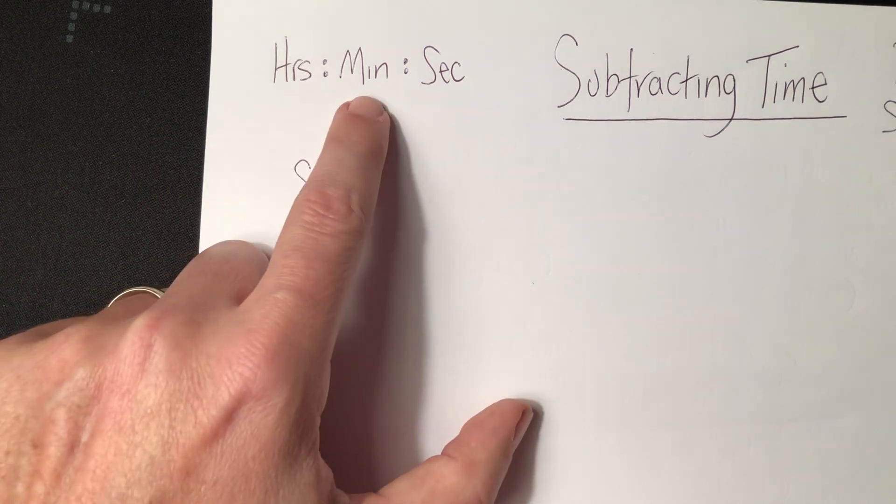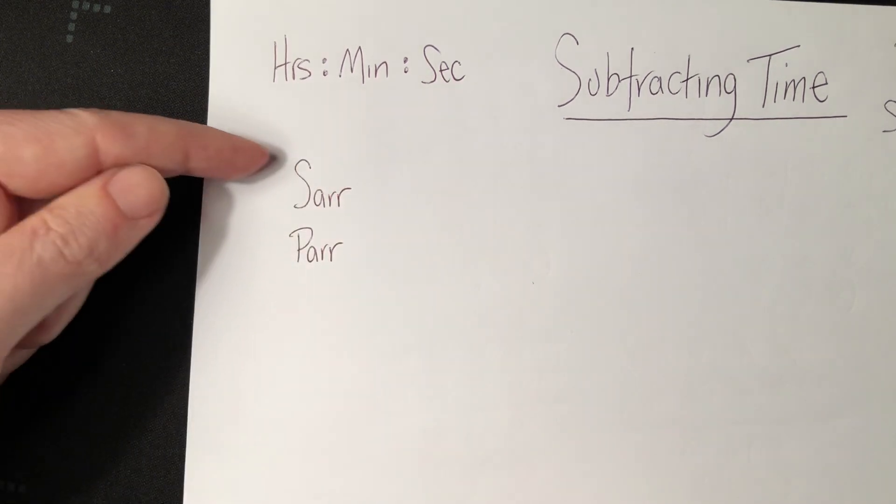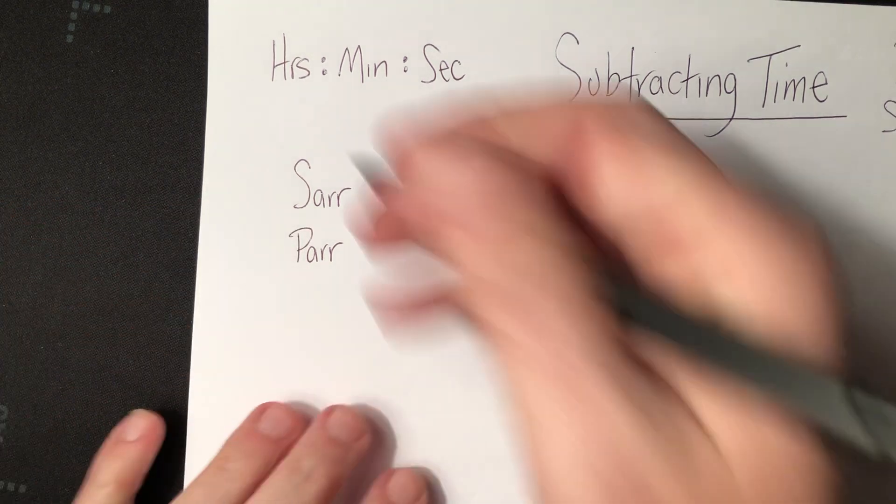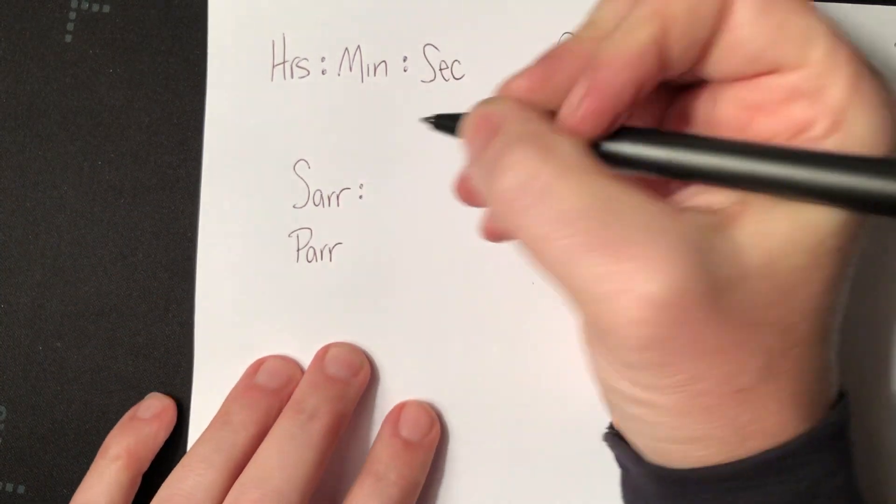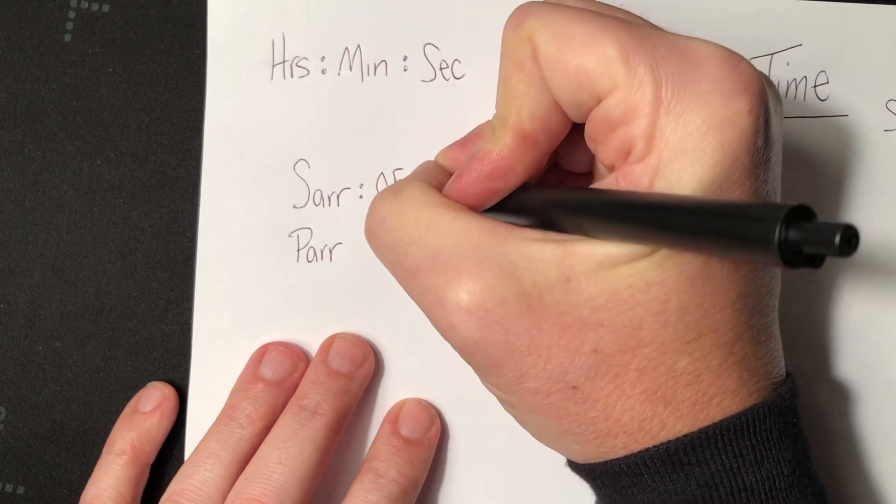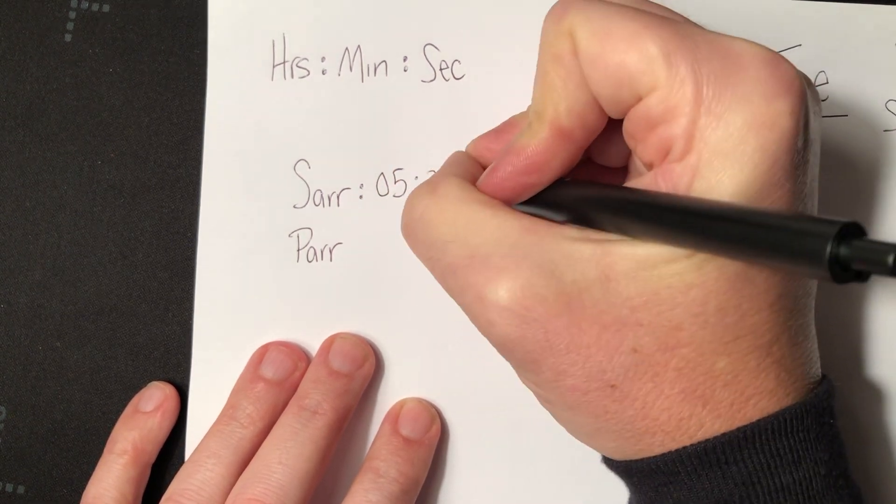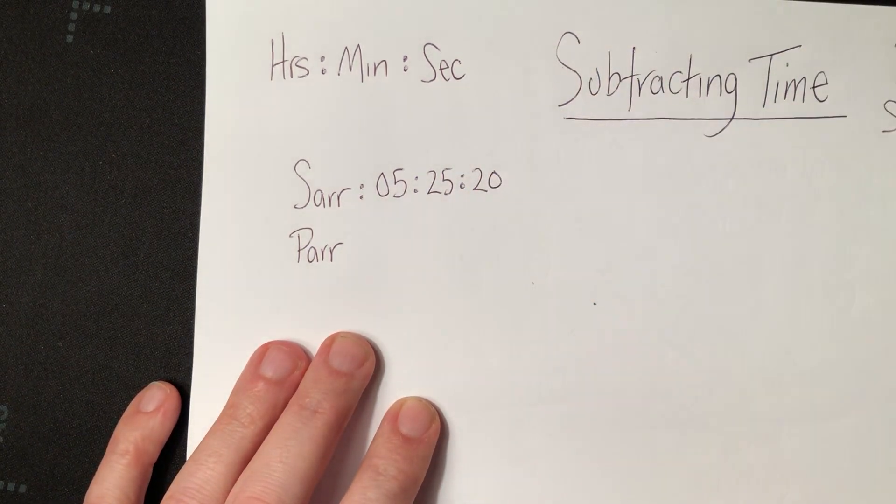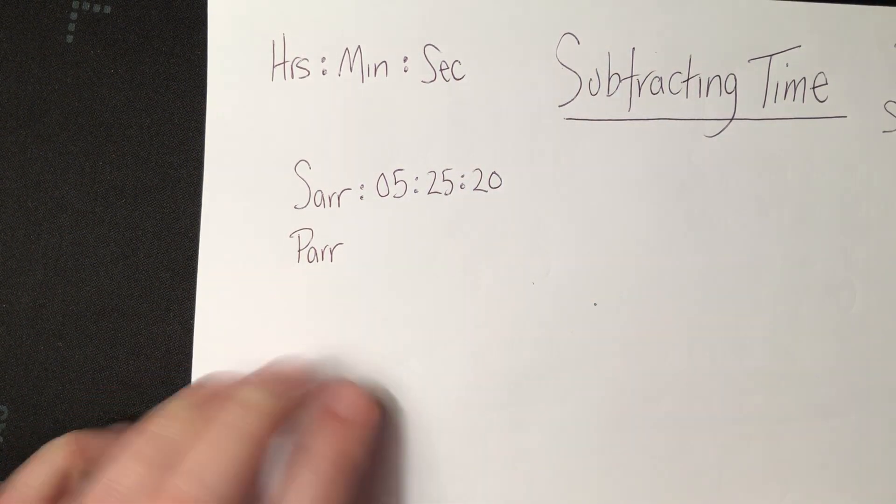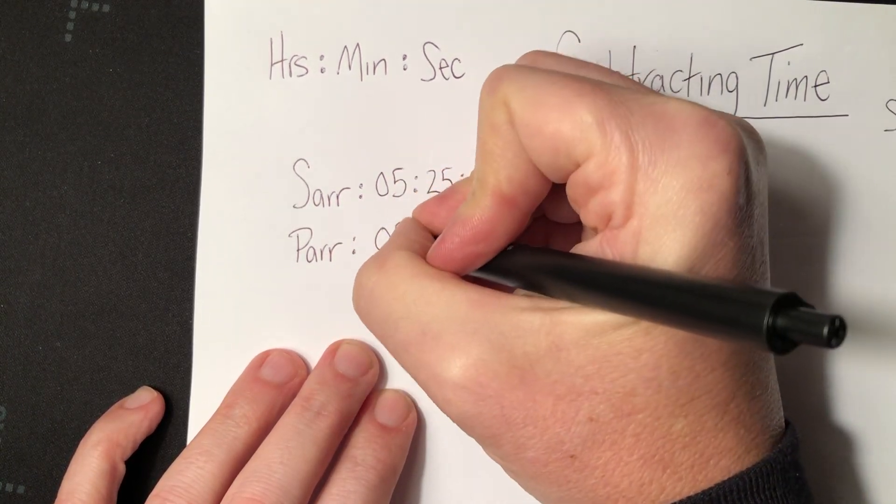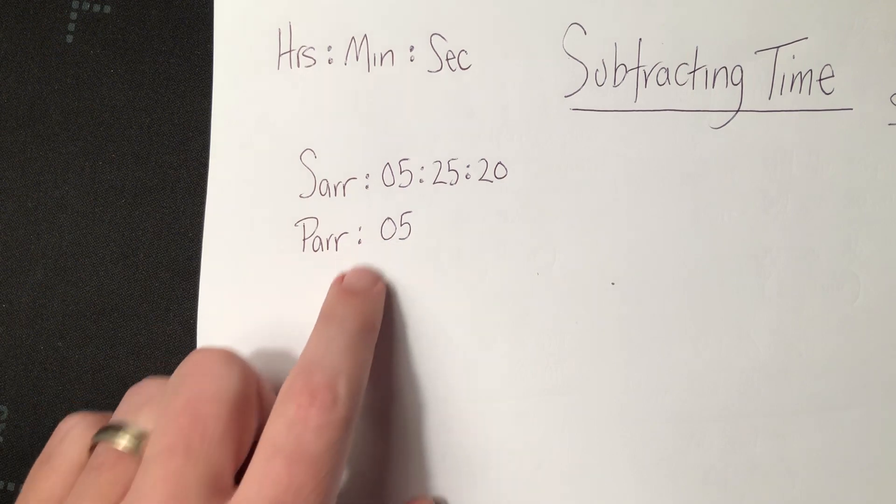So let me show you how this is going to be done. And I'm going to set my time up as hours, minutes, and seconds. S wave is always on top. P wave is always on the bottom. Always. So if the S wave shows up at 5 hours, 25 minutes, and 20 seconds, the P wave has got to be earlier.